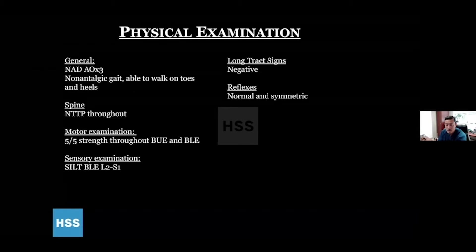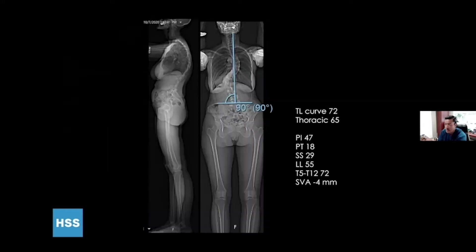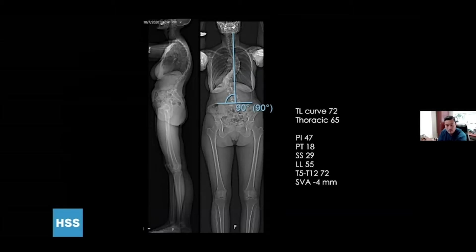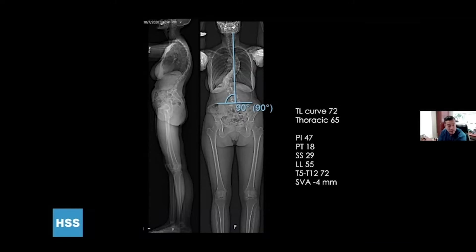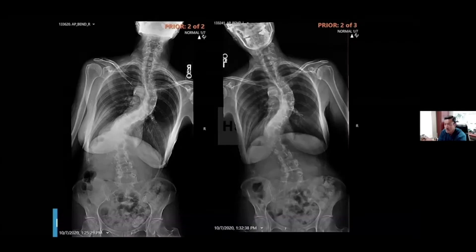She's otherwise neurologically intact, relatively benign exam. Here are standing AP and lateral x-rays demonstrating a 72-degree thoracolumbar curve, thoracic curve of 65, slight imbalance to the left, and mild thoracolumbar kyphosis.